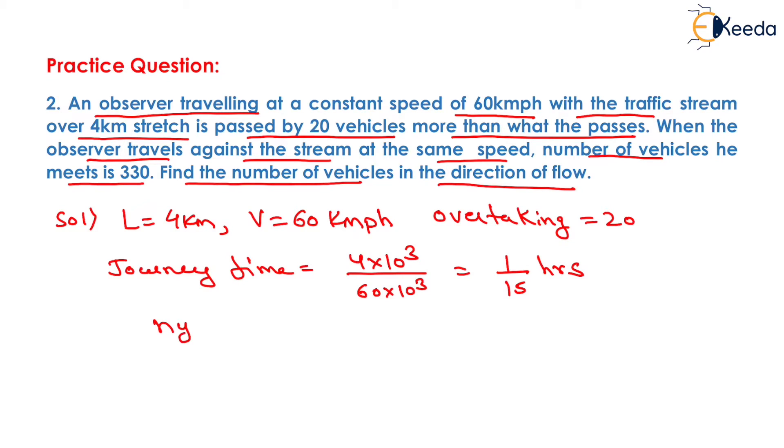Now, NY will be equals to 20 and NA will be equals to 330. Now, TA will be equals to 1 by 15 hours and TW will also be equals to 1 by 15 hours.